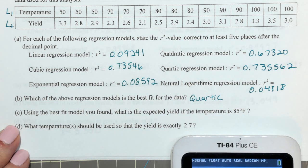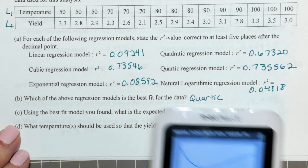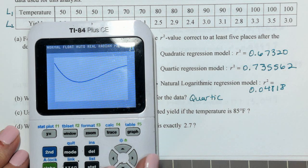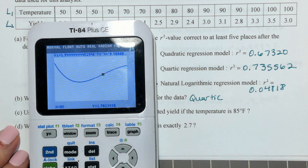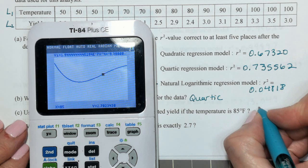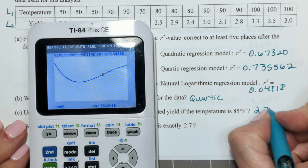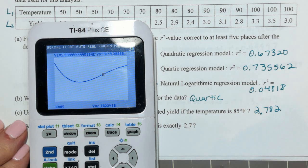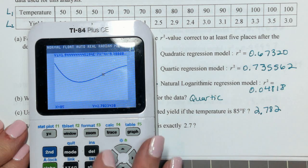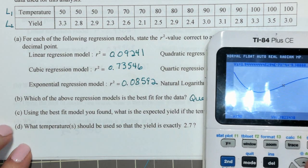Go back to my regular graph. We're going to use this graph for the remainder. Using your best fit model, what is the expected yield if the temperature is 85 degrees? So, I'm going to trace to 85 degrees. And the yield, the Y value there is 2.782. Give at least three places after the decimal point.